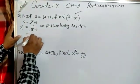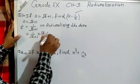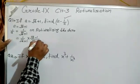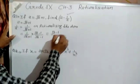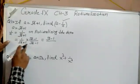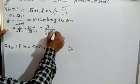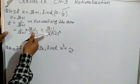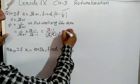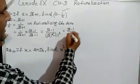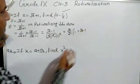1 upon (√2 + 1), multiply and divide by (√2 − 1) upon (√2 − 1). This equals 1 × (√2 − 1) = (√2 − 1) upon (a + b)(a − b) = a² − b², that is (√2)² − (1)². Now, square root and square cancel each other. We are left with (√2 − 1) upon (2 − 1), which equals √2 − 1.